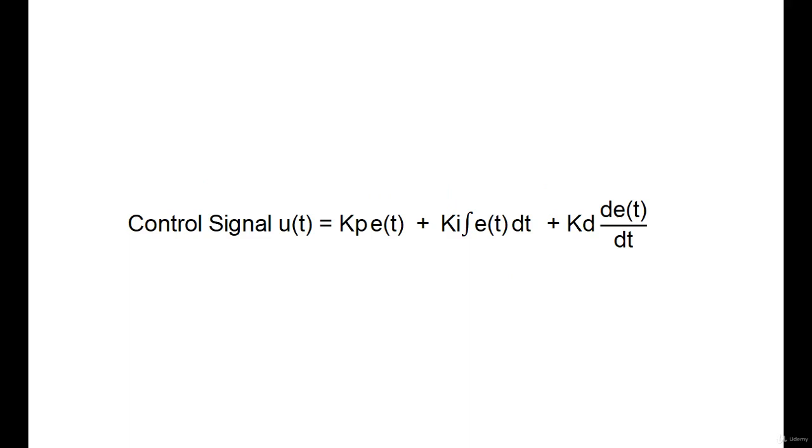The PID controller can be mathematically written out as shown, where our control signal is a summation of the three mathematical operations. The P term involves taking the error and multiplying it by a constant Kp, the I term involves integrating the error over time, and the D term involves taking the derivative of the error. Now you can see that each term has a constant in front of it. These are known as the tuning constants and are the essential design parameters that if chosen properly will allow the controller to output a control signal that will bring the error down to zero.